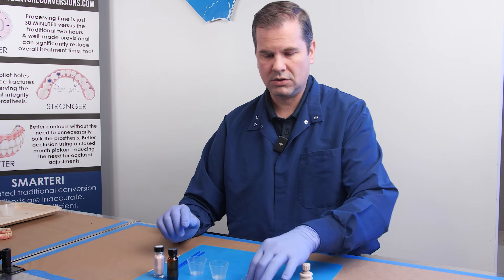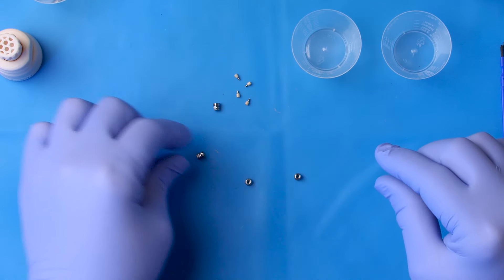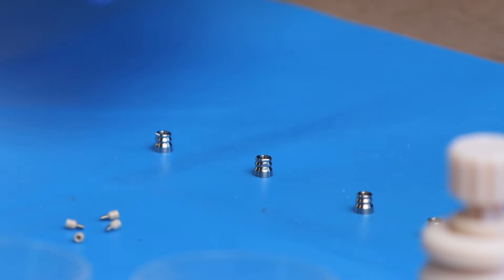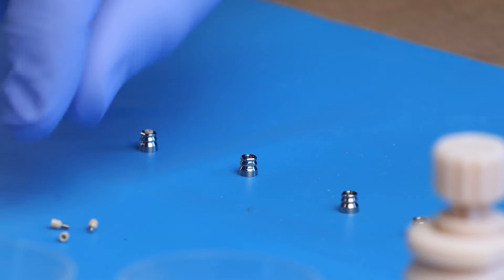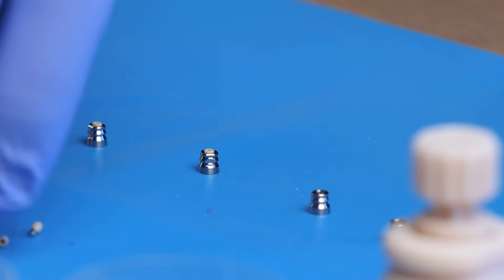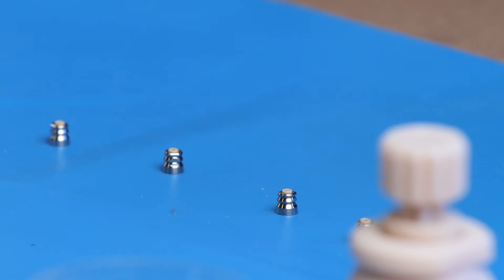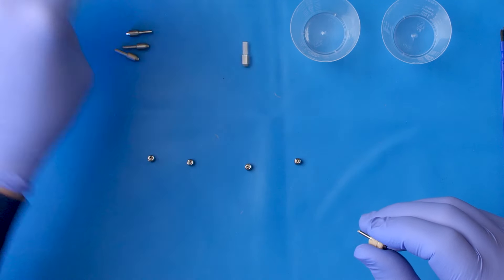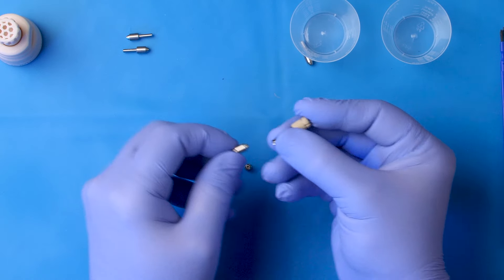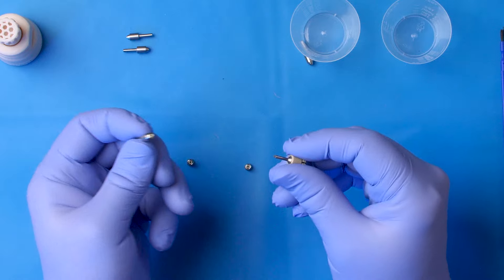What we're going to do is line up our temp cylinders, our tie bases here. I line them up in front of me, and then I drop the separable fastener into each tie base. Then I take my torque driver and secure each tie base to what we call a coating mandrel. It's really just a lab analog that's easy for me to handle by hand.